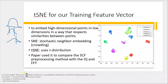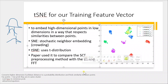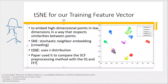The repulsion and attraction happen in the lower dimension. If a point sees that it is very similar to some other points, it will attract to those points and repel from others. We also want to minimize the distance — or the probability — within one cluster.